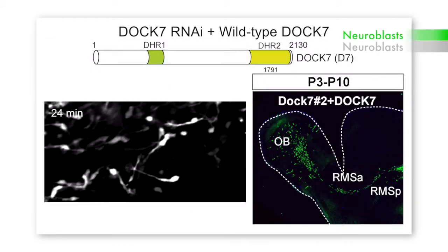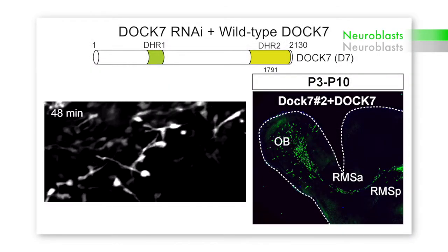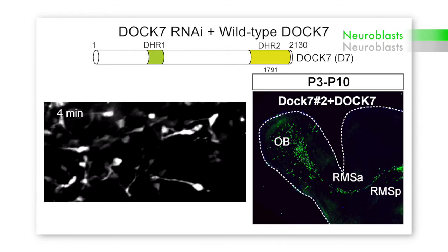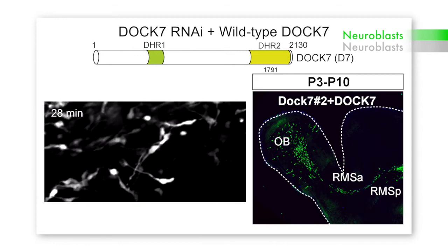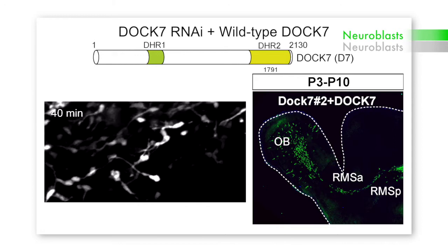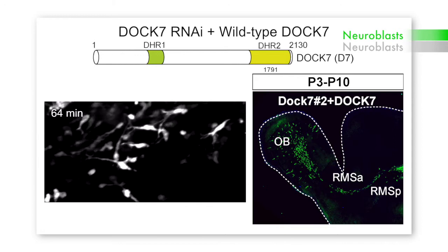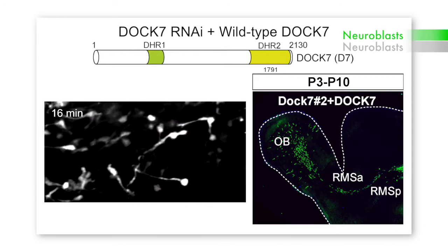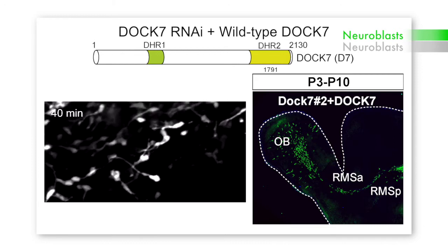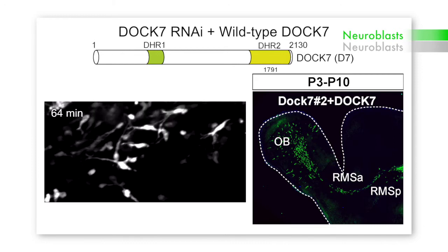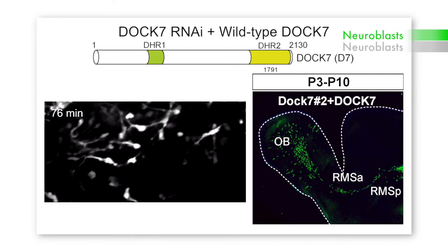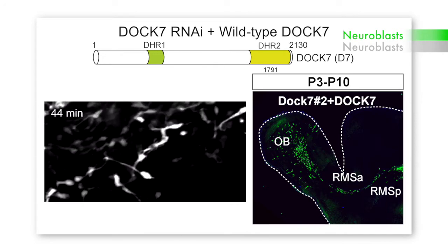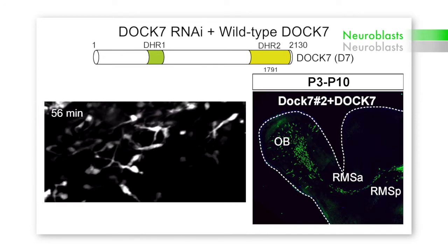If you deplete DOCK7 and add back the wild type, you can rescue migration. But if you add back mutants with different regions, you can dissect that this protein controls both critical steps: it is first critical for the extension and stabilization of the leading process, and then it plays a second role in the forward movement of the soma.